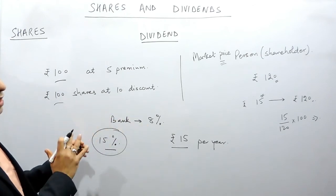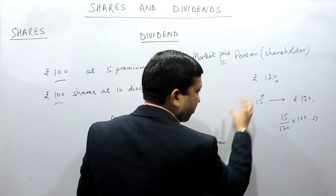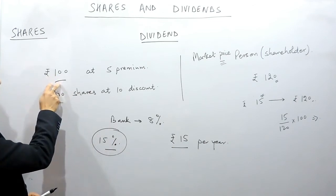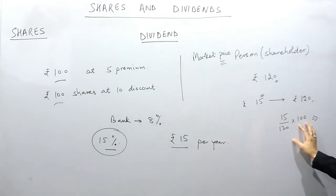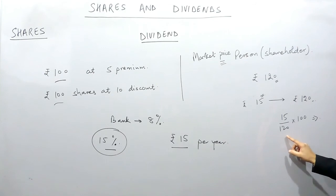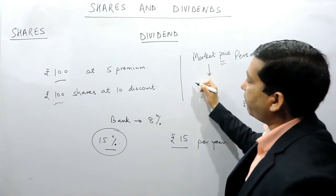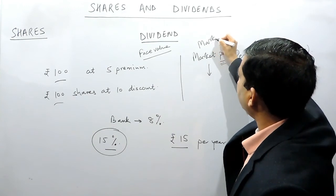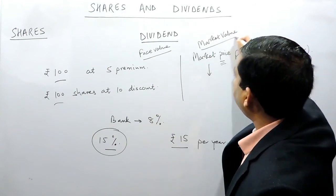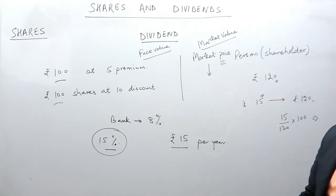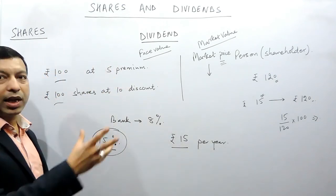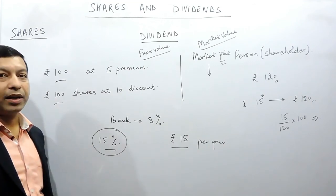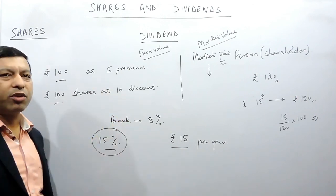As far as the amount is concerned, the company is paying Rs.15 and the person is getting Rs.15. But the company calculates Rs.15 on the par value or face value, while the shareholder calculates this Rs.15 on the market value or market price. So there are two very important terms: the face value of the share and the market value of the share, which generally depends on the dividend the company is paying. In the next video, we will talk about how to solve questions based on shares, and this topic is largely a kind of profit and loss.